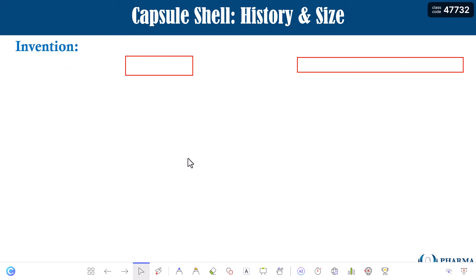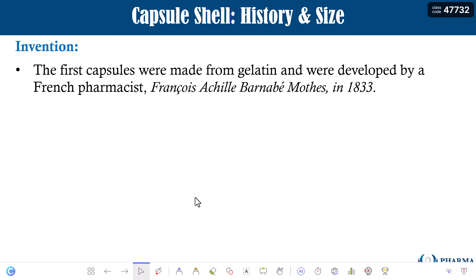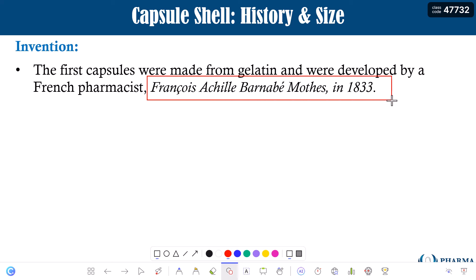Who invented the capsule shell? A little history: the first capsules were made from gelatin and were developed by a French pharmacist, François Achille Barnard Mothe — apologies for the pronunciation — in 1833, in the 19th century. The first capsule shell was made out of gelatin, but nowadays capsule shells are also available from HPMC.